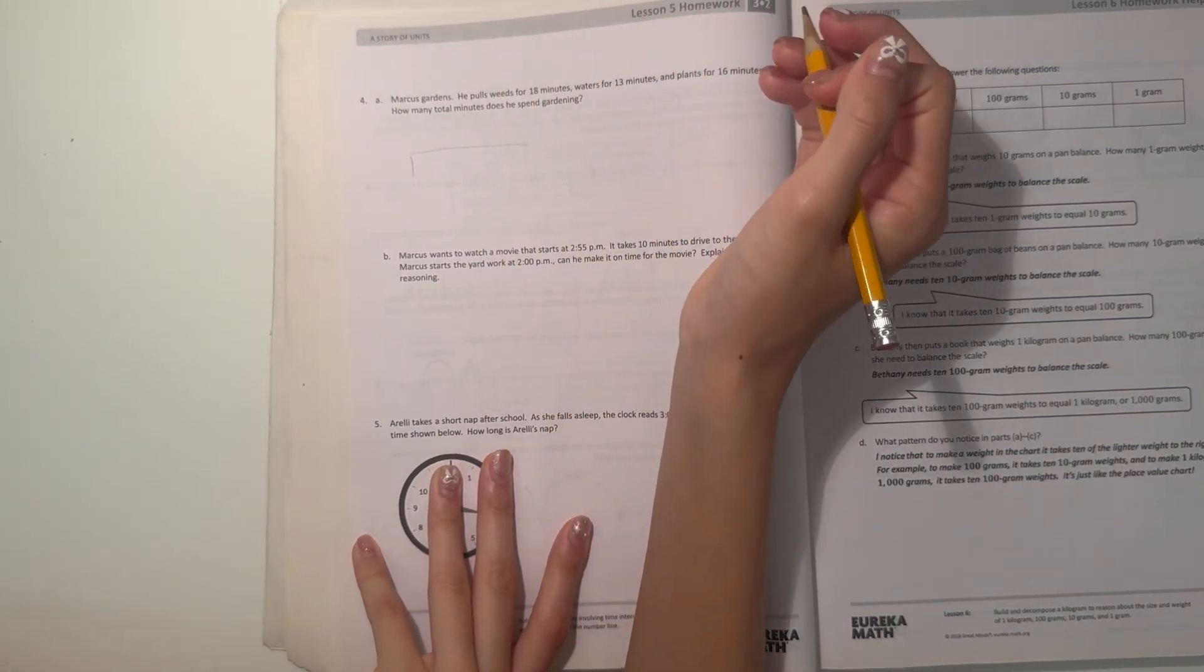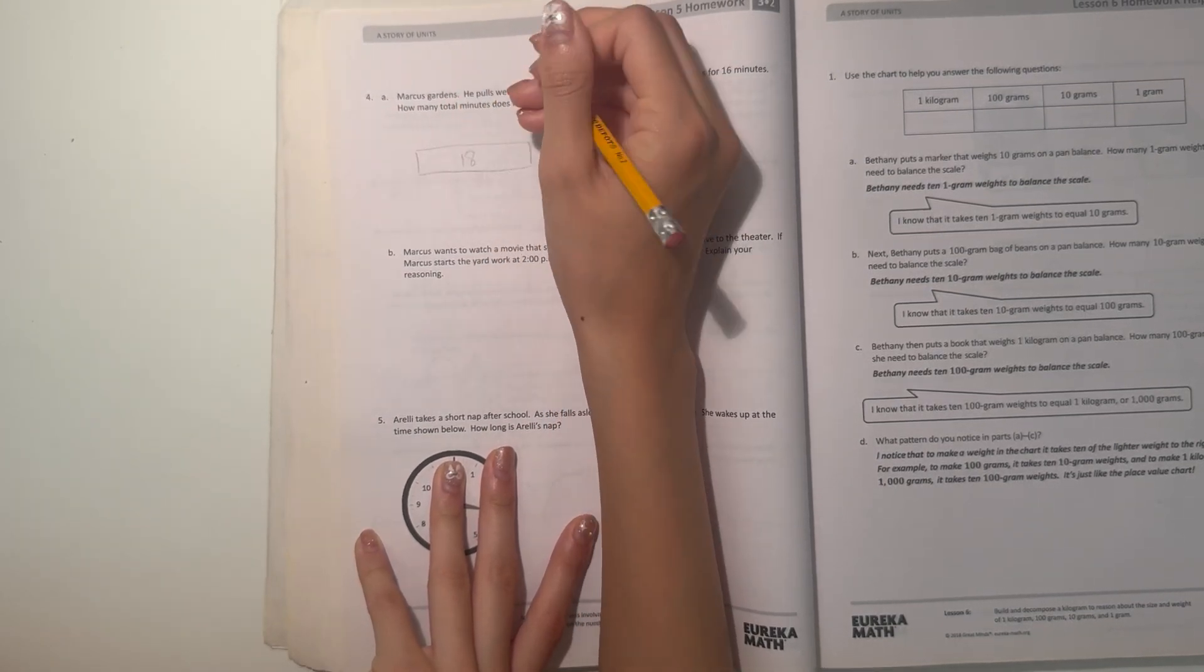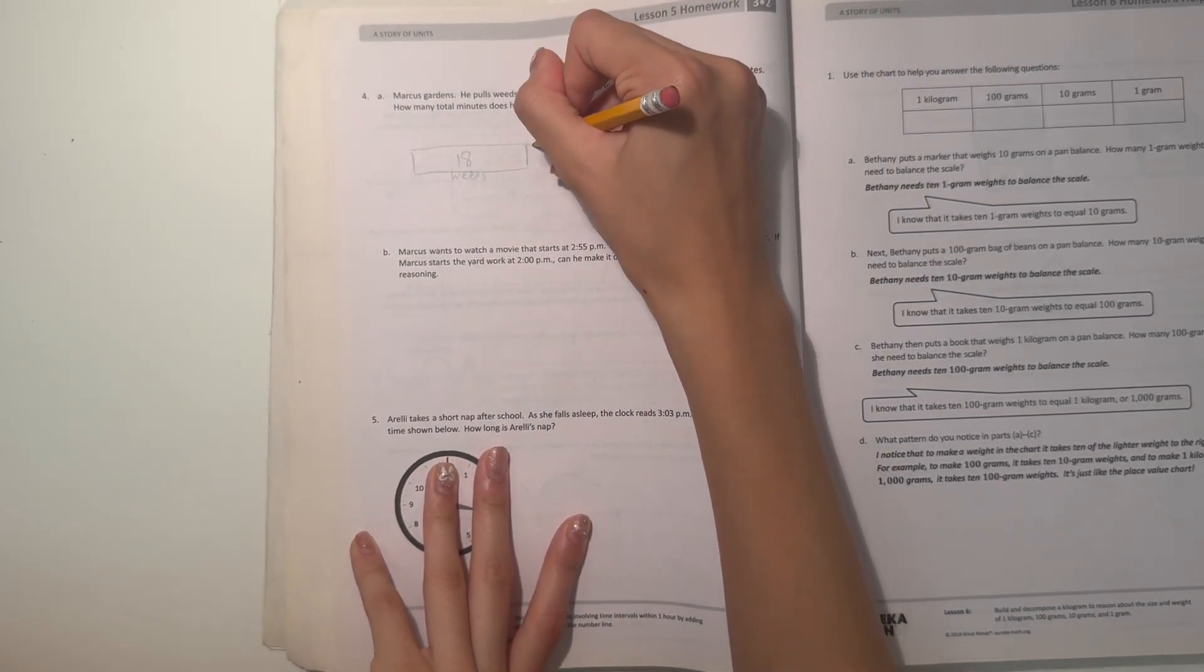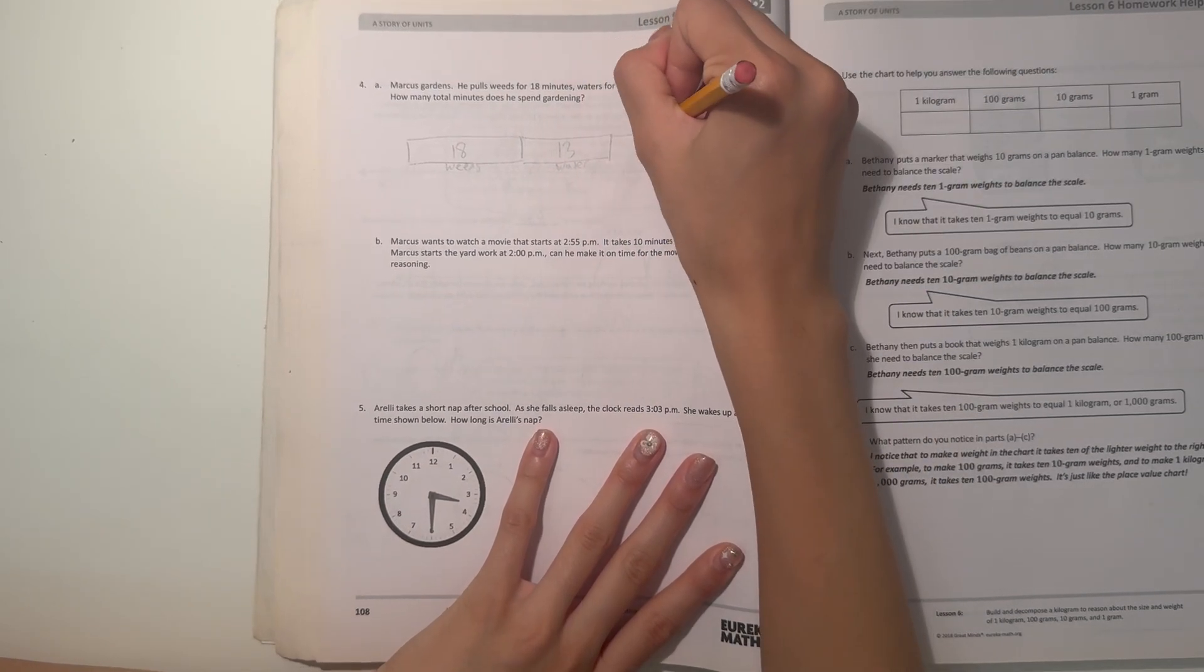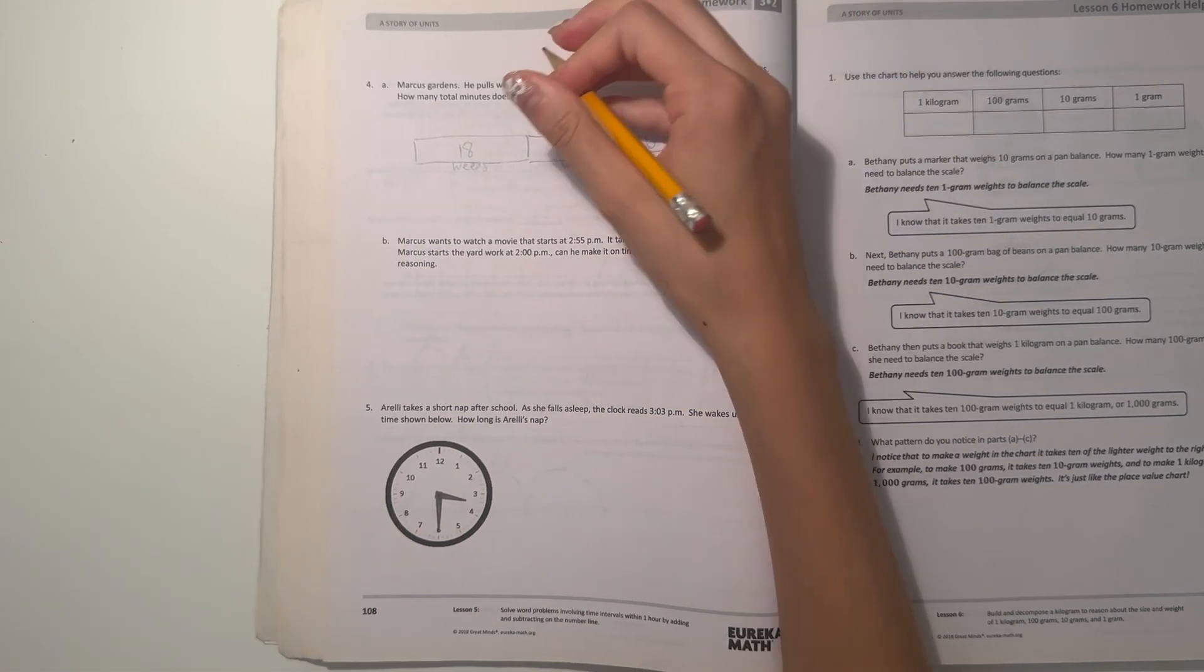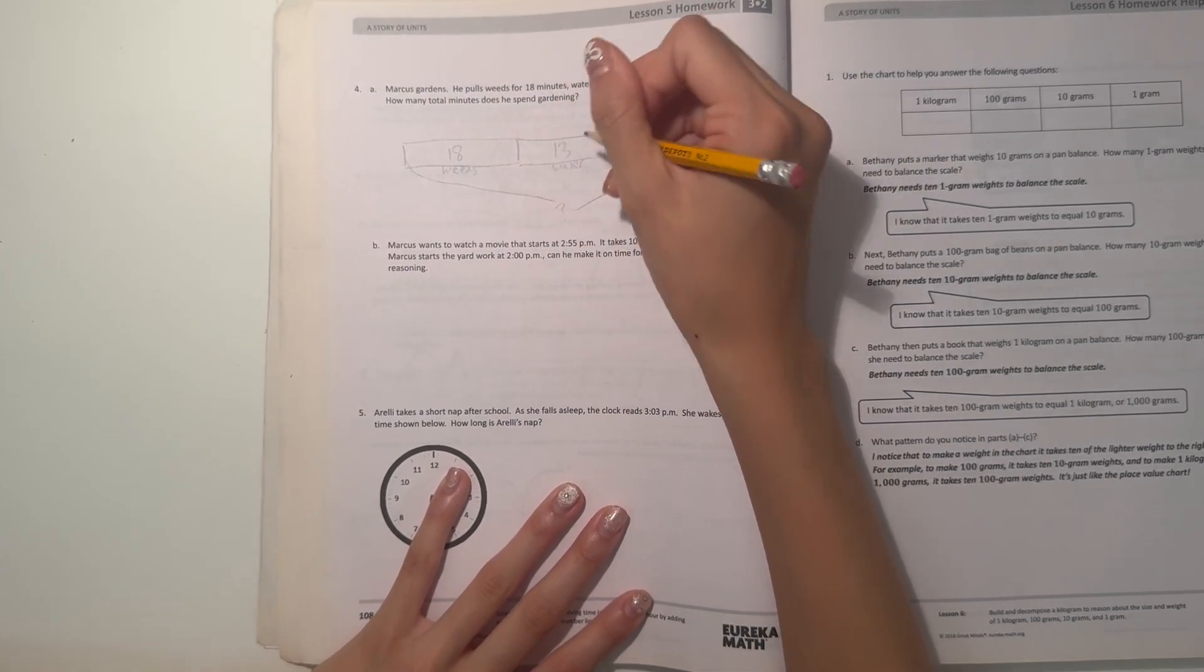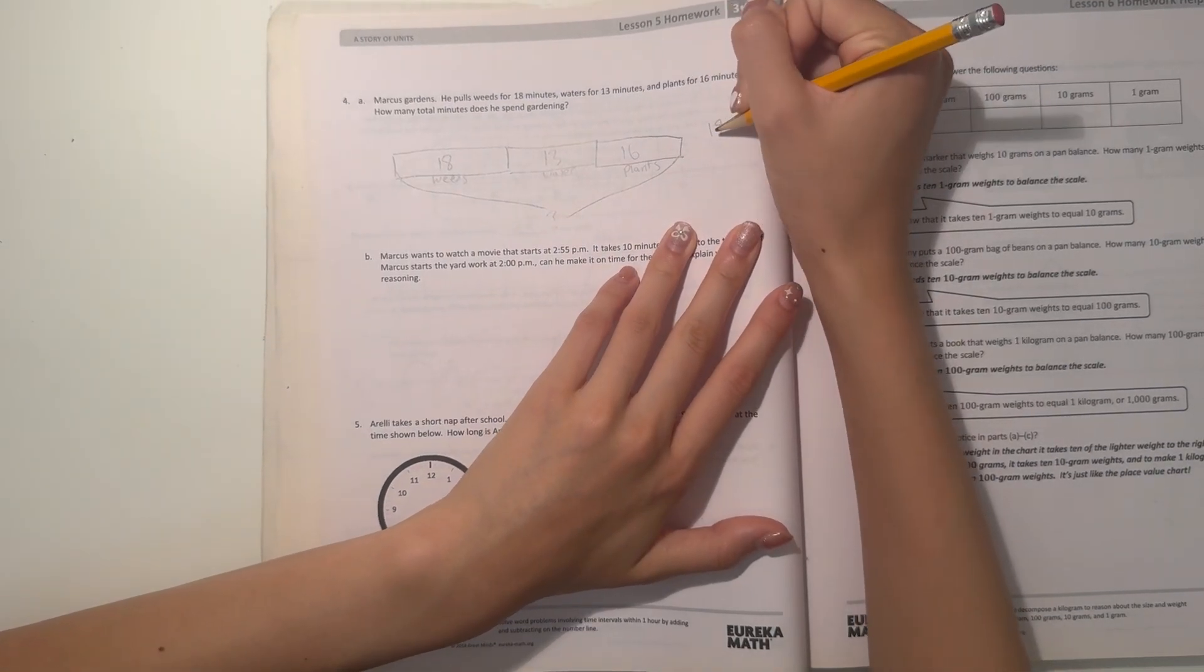So he spends, let's see, what do we know? He spends 18 minutes pulling weeds. That's like weeds. And then he spends, he waters for 13 minutes. So our job is to find out what is the total of minutes. So let's see, 18, 13, 16. Let's add those numbers up.